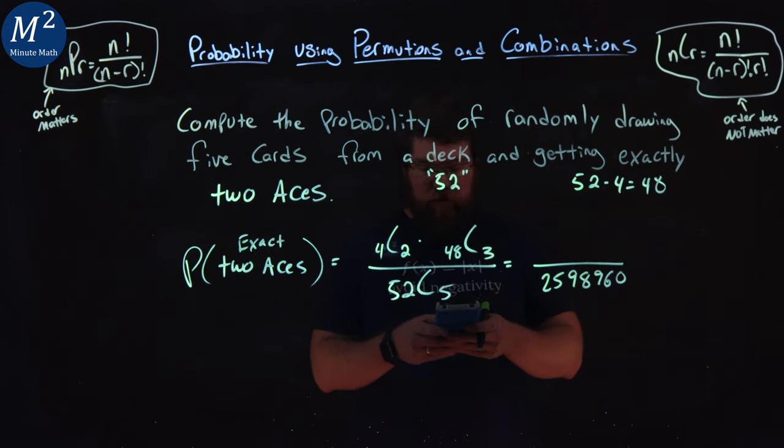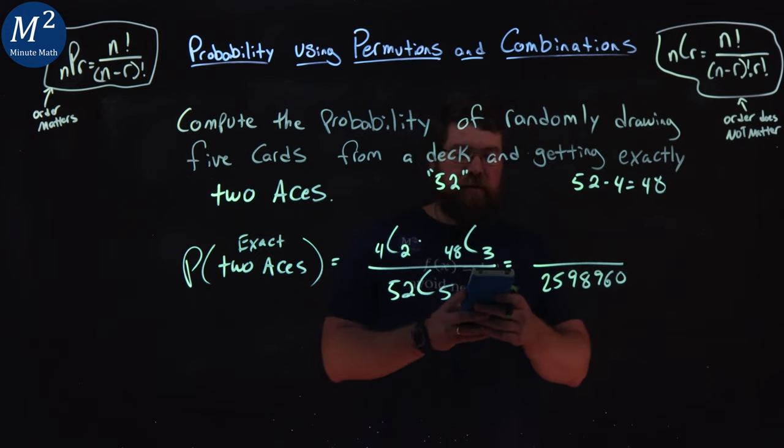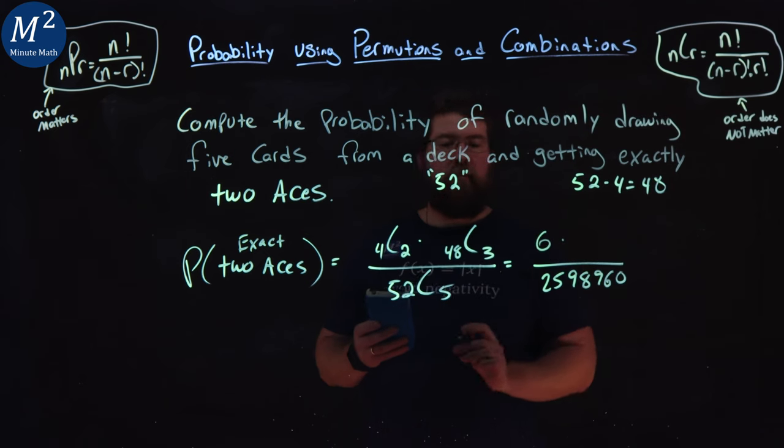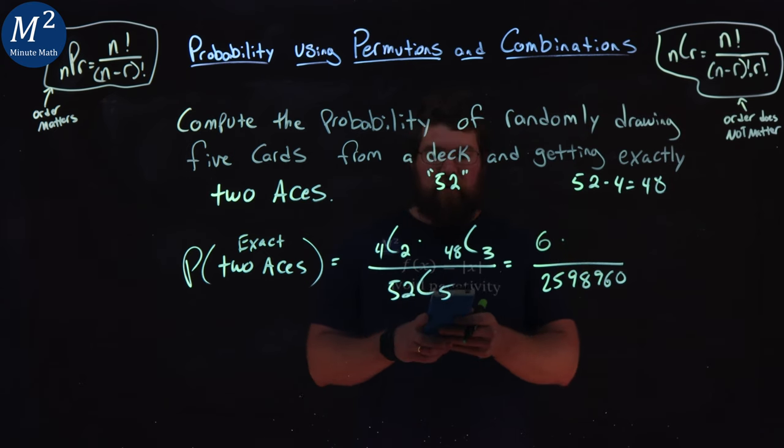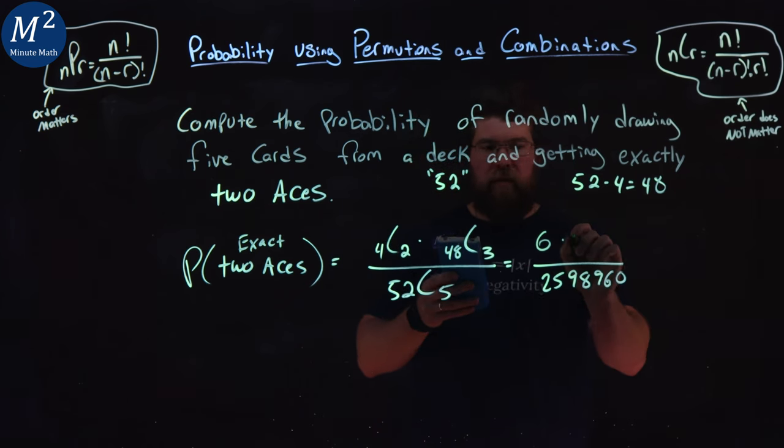Now if you want to do the same thing here for four choose two, let's practice the reps in our calculator. Four choose two, that is six, multiply it by 48 choose three. And that's 17,296.